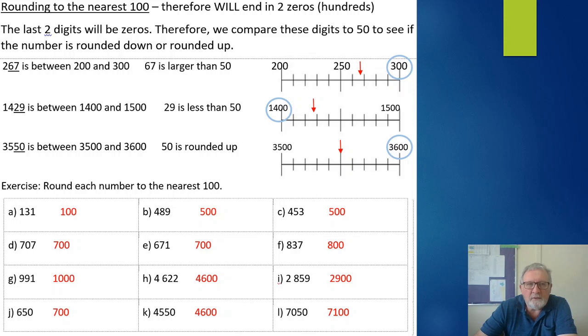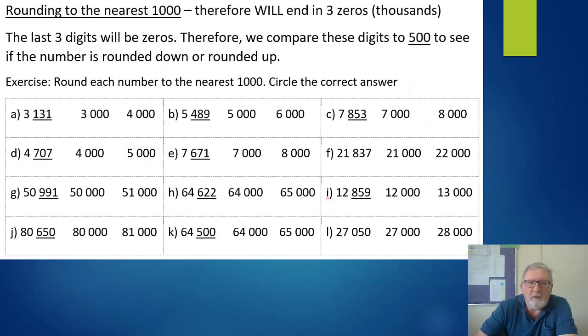Well we've rounded to the nearest ten, we've rounded to the nearest hundred - that's right, time to round to the nearest thousand. When we round to the nearest thousand it will end in three zeros at least. And yes, everything goes up by a place value, so we're going to compare the last three digits to 500 to see if it's more than the next thousand or less than the next thousand to determine whether we round up or round down.